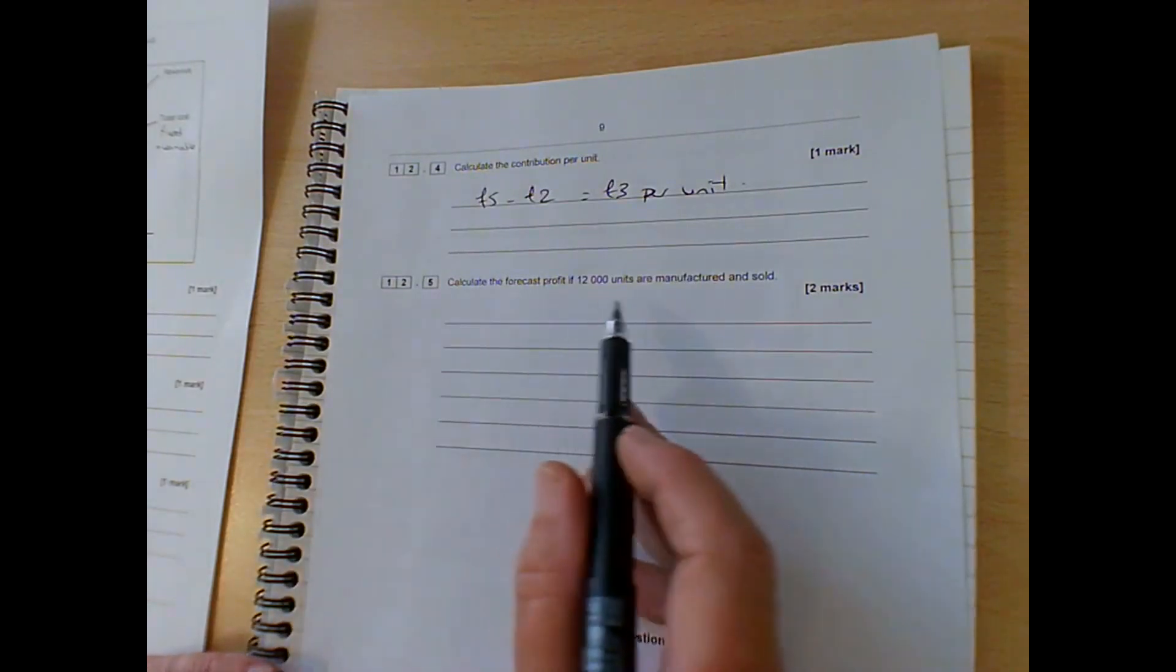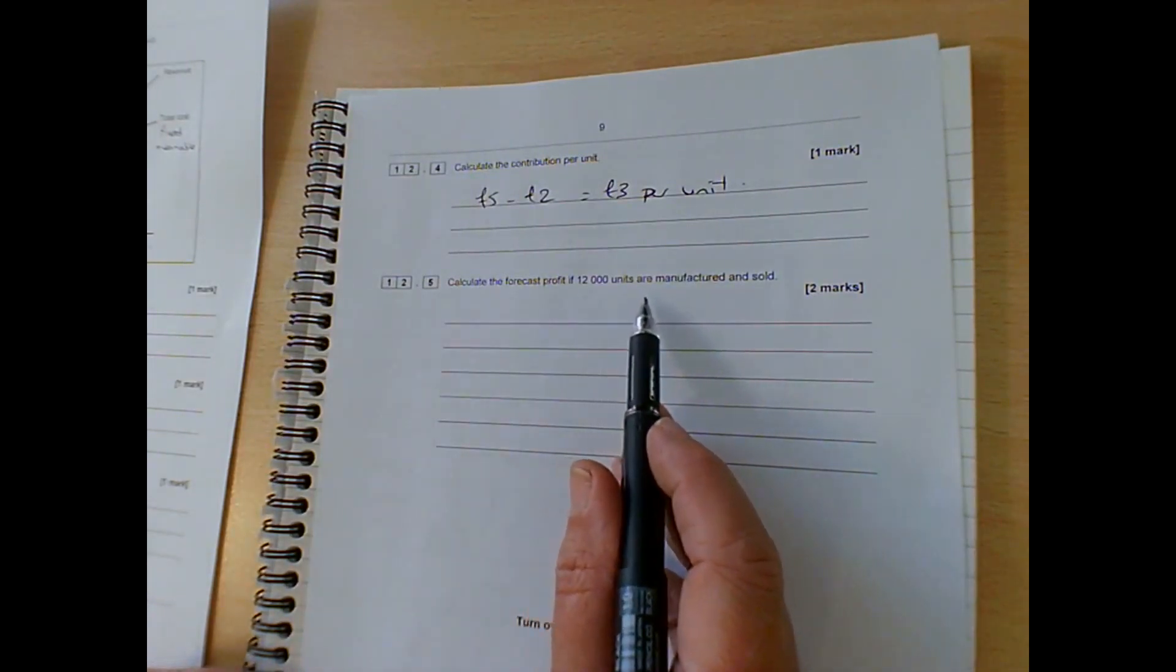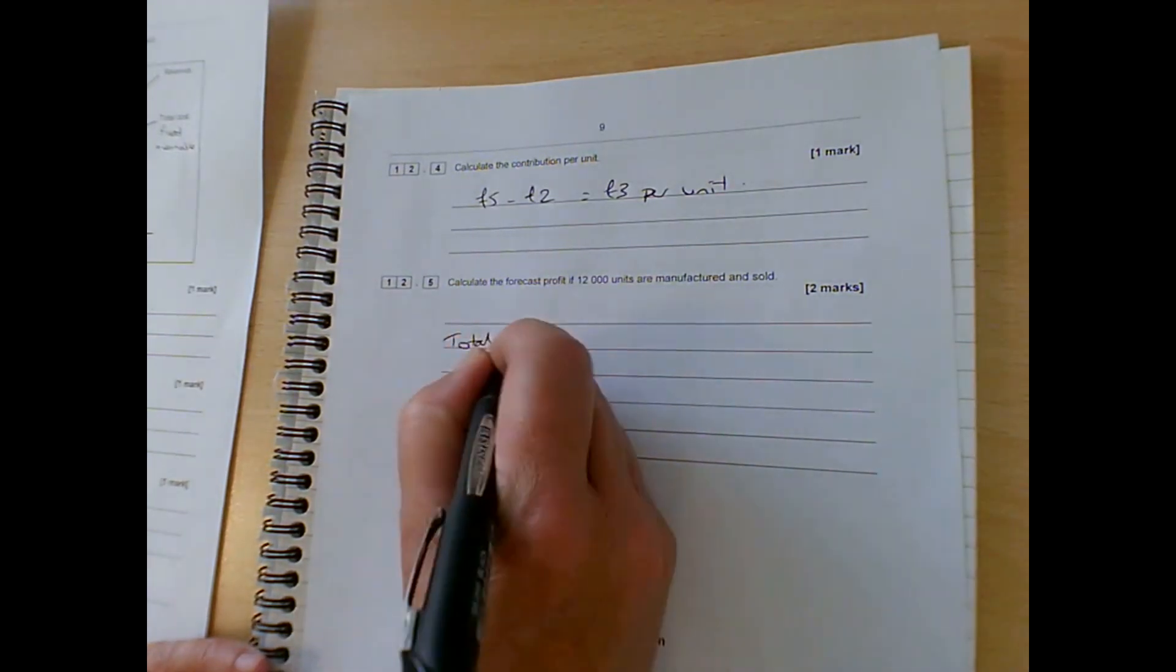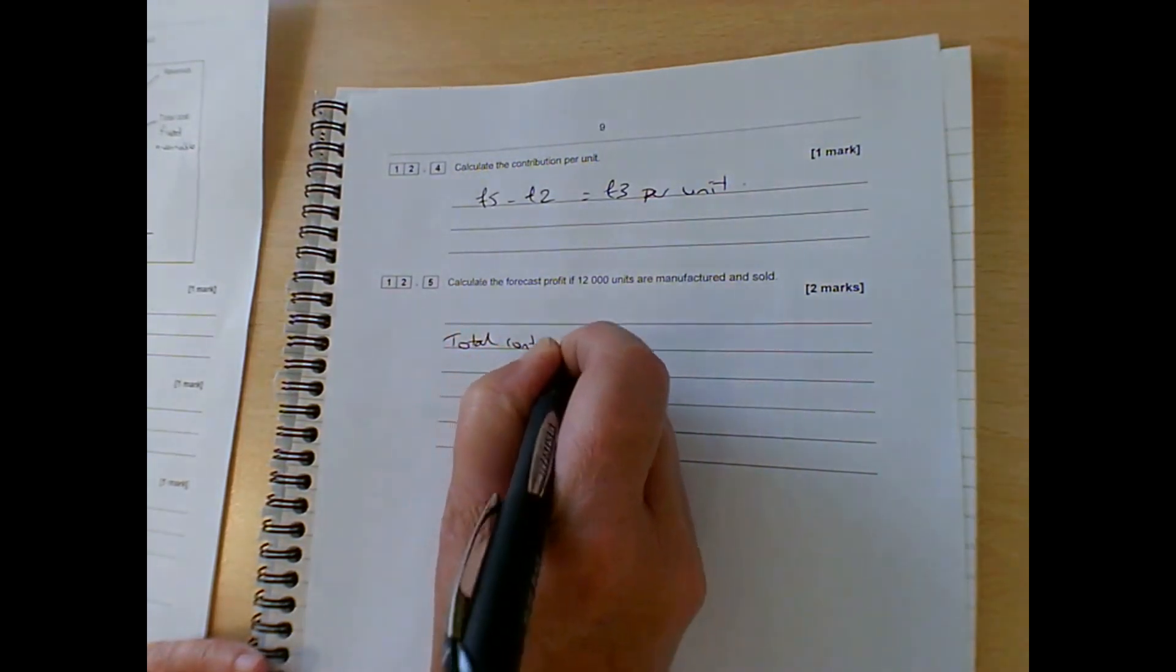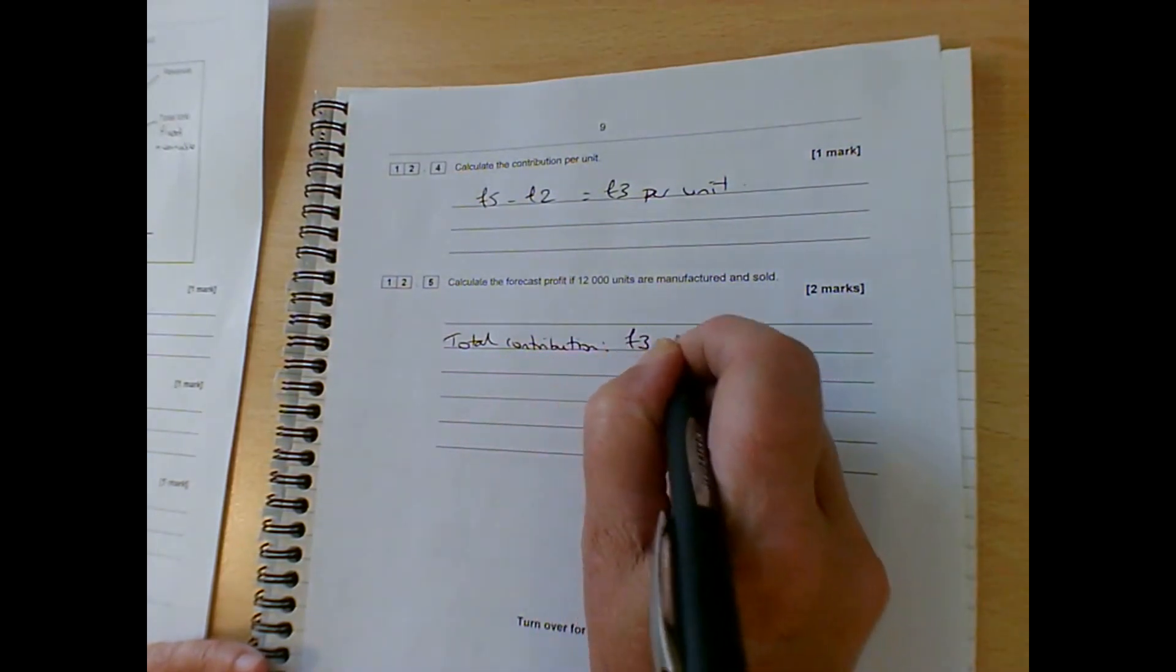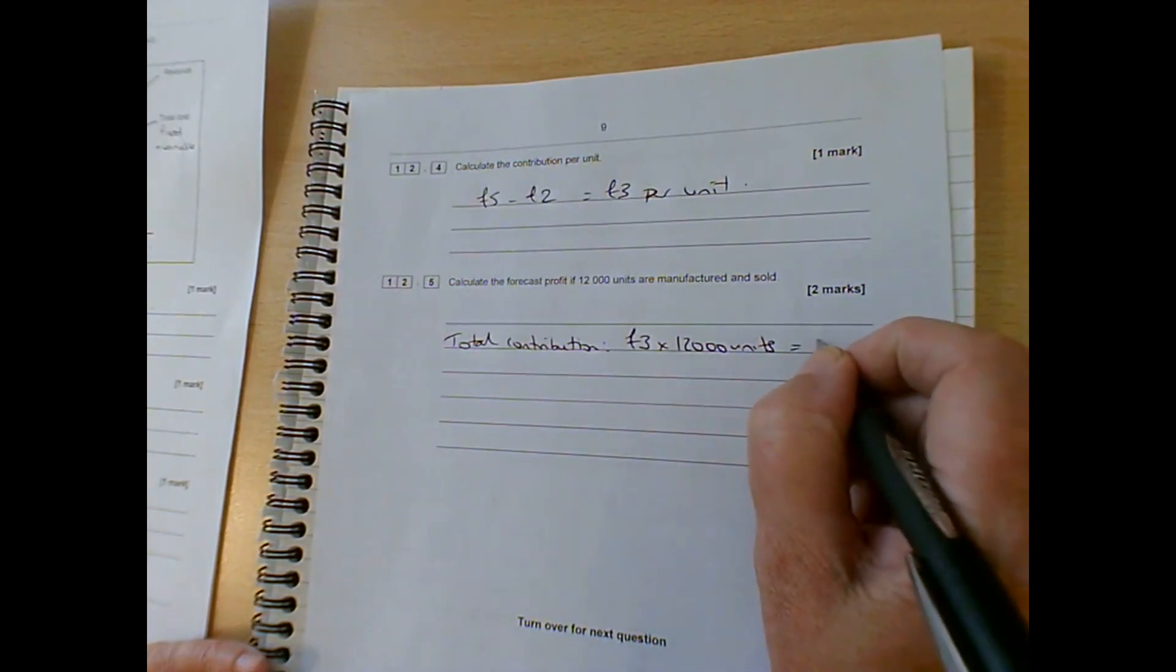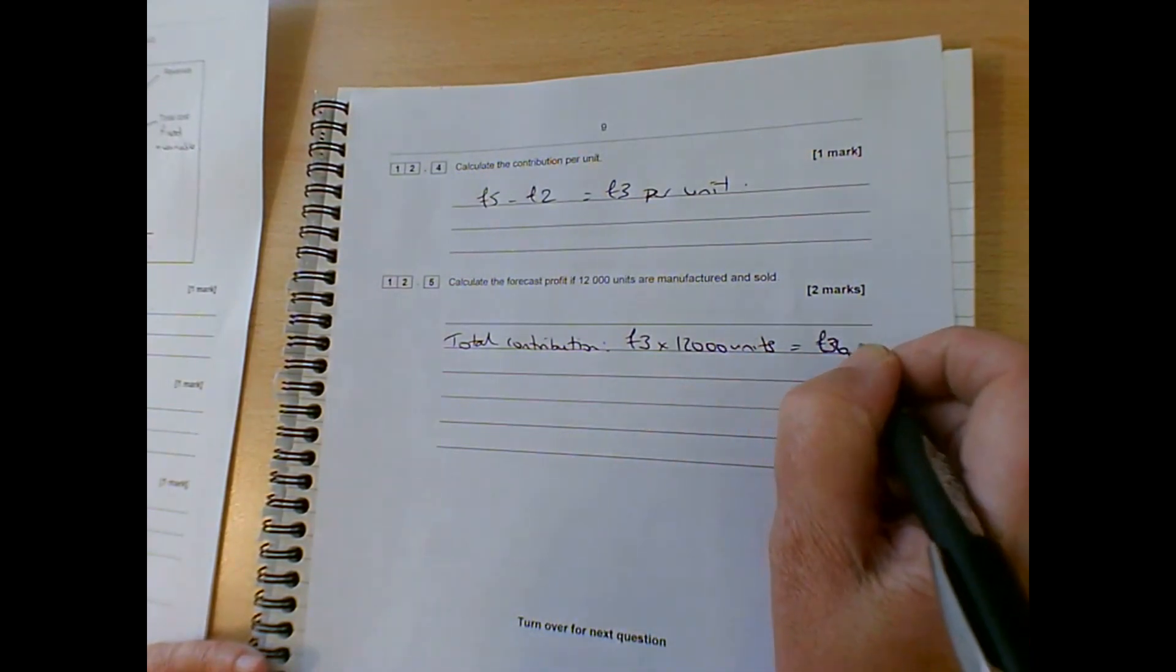The next part we've got to do is calculate the forecast profit if 12,000 units are manufactured and sold. So the total contribution, if we do that, it's £3 a unit times 12,000 units. It's going to give us £36,000.